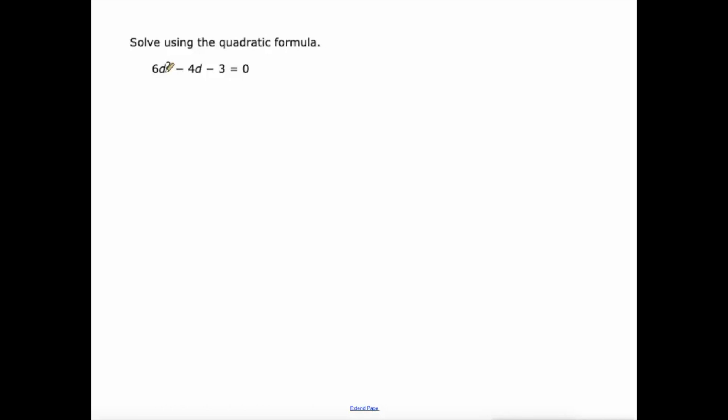What about this one? We got a is 6, b is negative 4, c is negative 3. D equals negative b. You know what, let's take a little shortcut here. What's the opposite of negative 4? It's 4. So there's negative b.